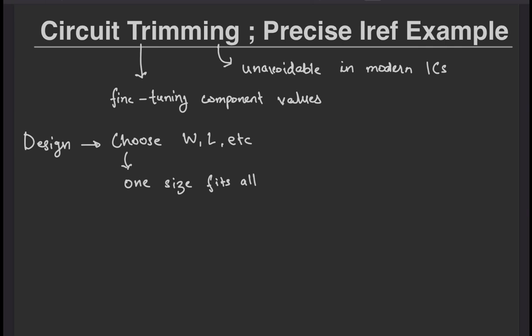What I mean by one-size-fits-all is that suppose you design for a certain parameter y to be constant with x. That might happen in one corner, but in other corners you might get something like this. As you can see, there's a variation from the nominal design that we designed for.